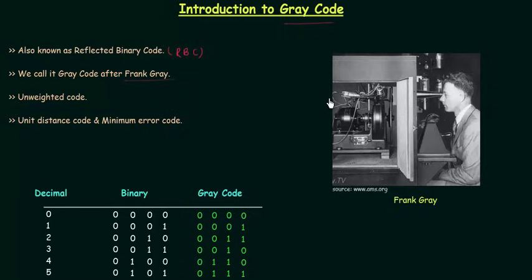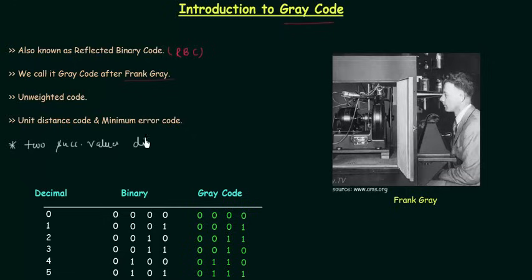Frank Gray was a physicist and researcher at AT&T Bell Labs who made numerous inventions in television. Gray code is a binary numeral system where two successive values differ in only one bit. This is the most important point in this presentation. Two successive values differ in only one bit.